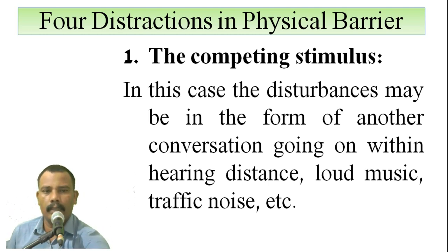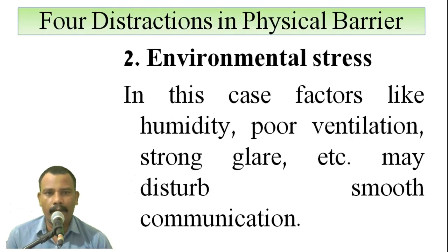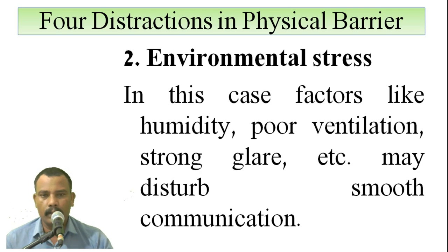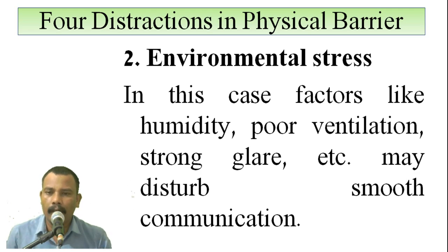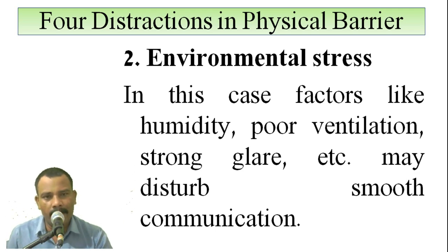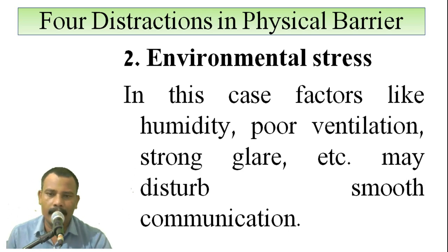The second distraction is environmental stress. Factors like humidity, poor ventilation, and strong glare may disturb smooth communication. For example, if there is poor ventilation, suffocation will occur and you may not be able to concentrate on your communication. Environmental stress can therefore stop or hamper the communication process, and because of all these factors there cannot be effective communication.